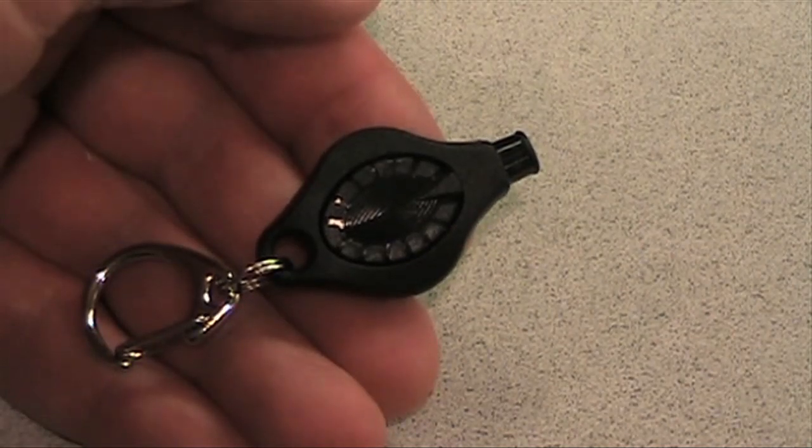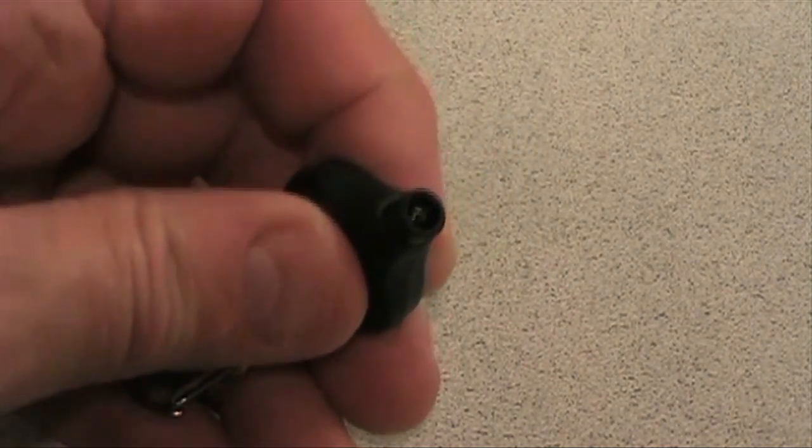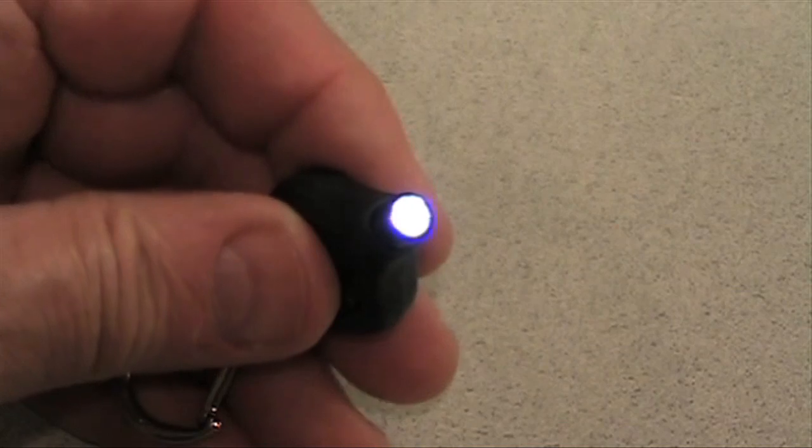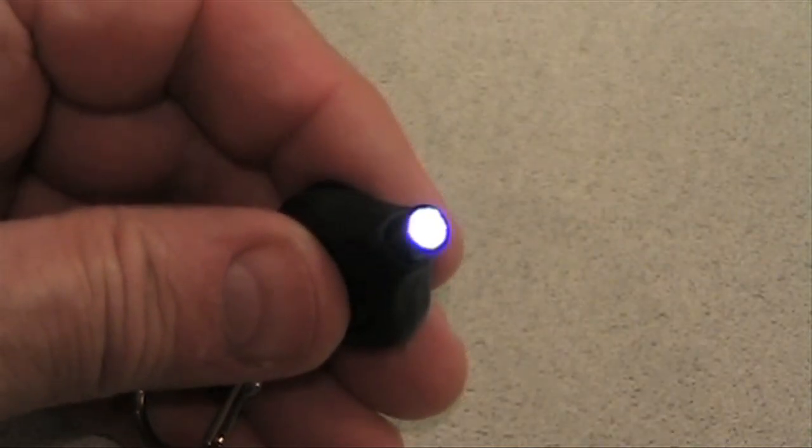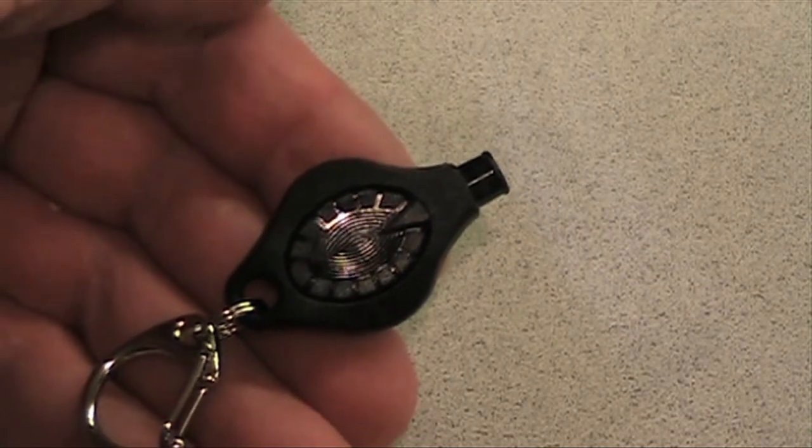It has a tough water-resistant case and 24-karat gold-plated contacts for durability. The light is very bright and is visible for over one mile. Photon lights are made in the USA.